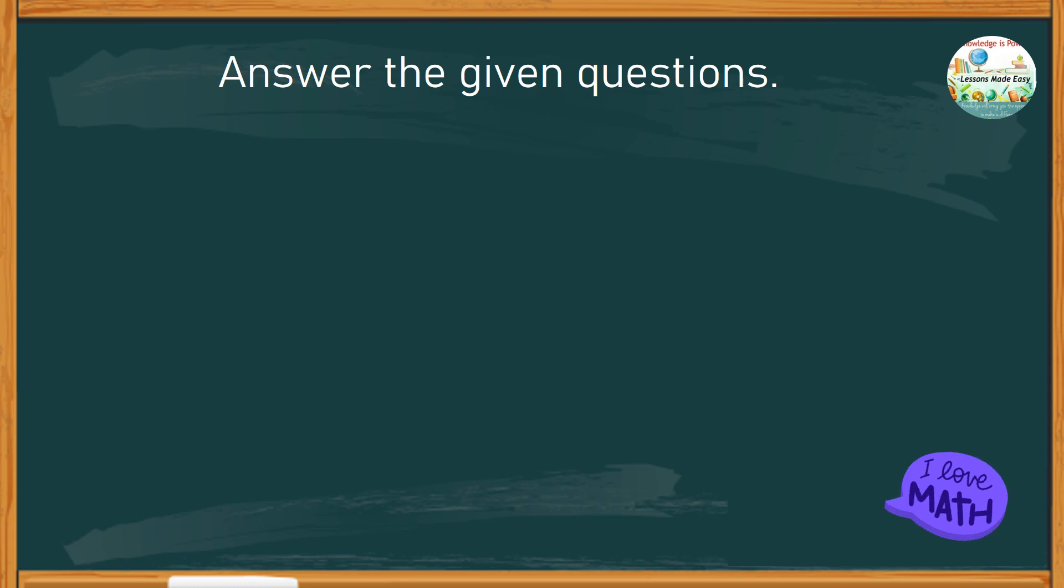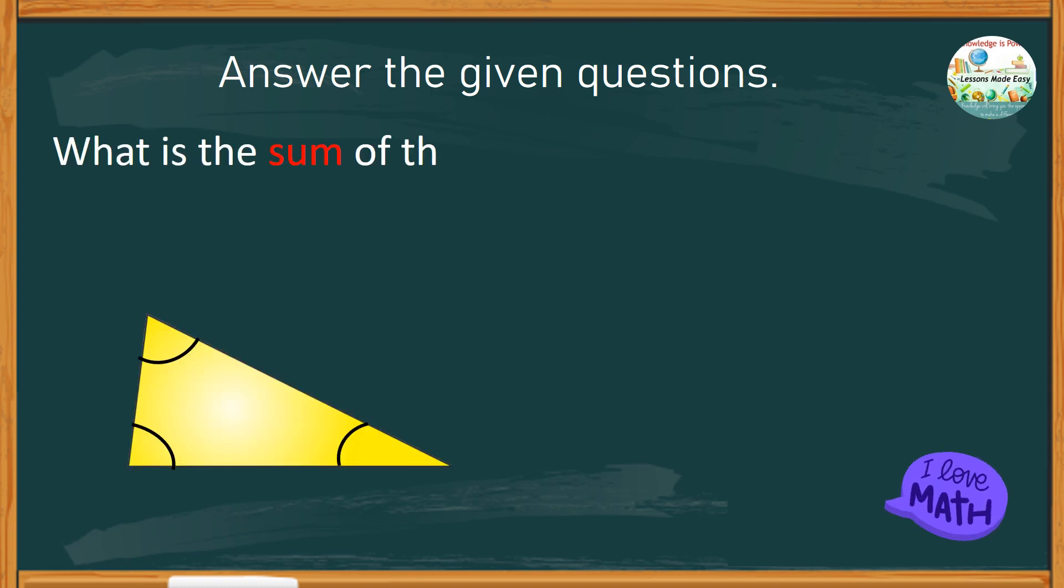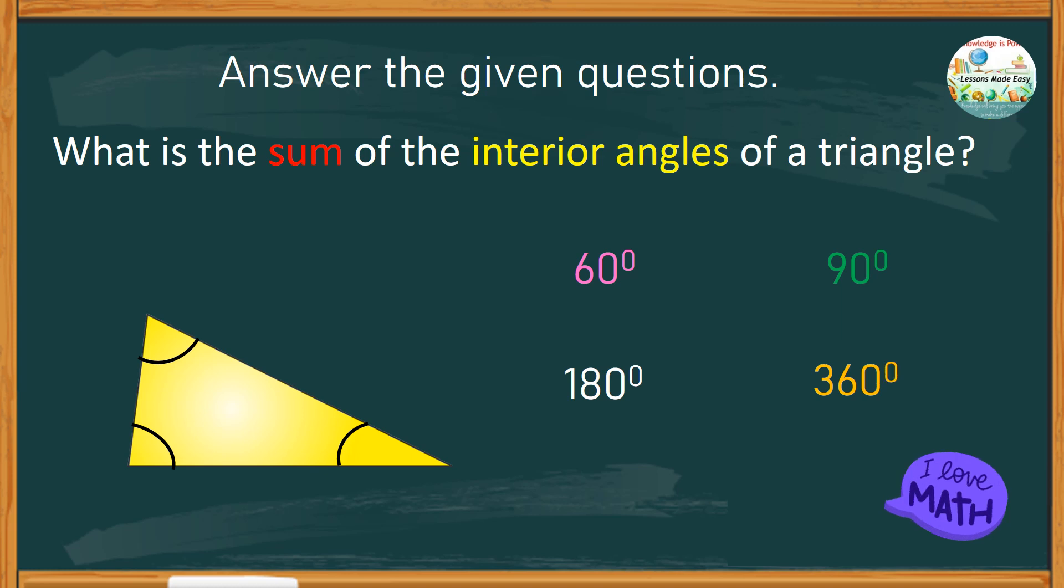So, here is the first one. What is the sum of the interior angles of a triangle? Is it 60 degrees, 90 degrees, 180 degrees, or 360 degrees? So, which one do you think it is? The correct answer is 180 degrees.